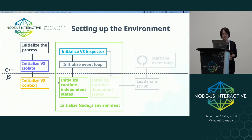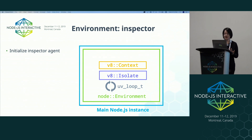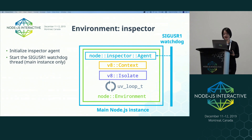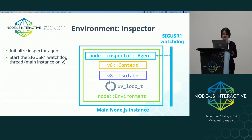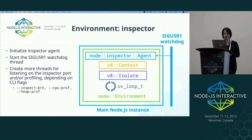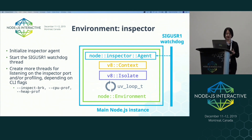After the event loop is fully initialized, we then initialize the V8 inspector, which is used for JavaScript debugging. This includes initializing the inspector agent, which is done even when the inspector is not active. We'll also spawn a SIGUser1 watchdog thread that wakes up and asks the main thread to start listening on the inspector port when the user sends SIGUser1 to the process — this is only done for main Node instances and not for workers. If the user passes --inspect-break, --cpu-prof, or --heap-prof when launching the instance, we'll also immediately create more threads for either listening on the inspect port or for profiling.